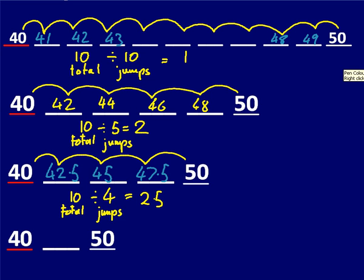And the last one. 40 to 50, that's still a total of 10. And we're doing it in 1, 2 jumps this time. Which means that each jump is going to be worth 5. So 40, 45, 50. And if you can do that, you'll be able to read scales, no problem.